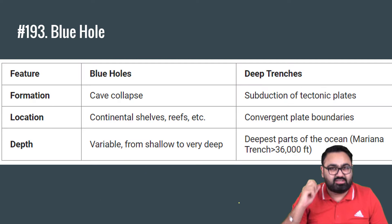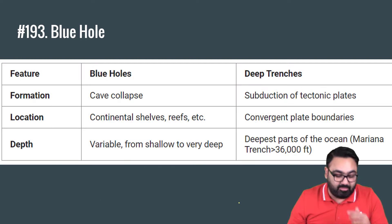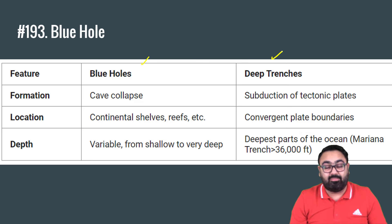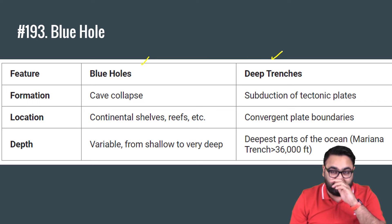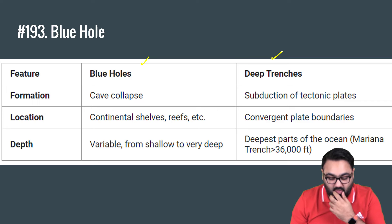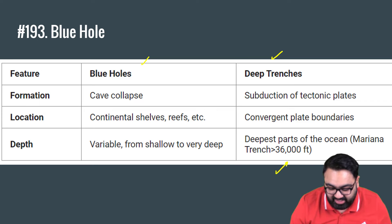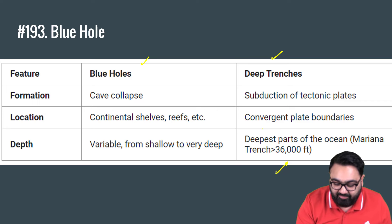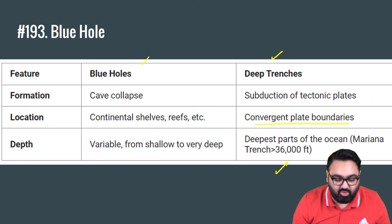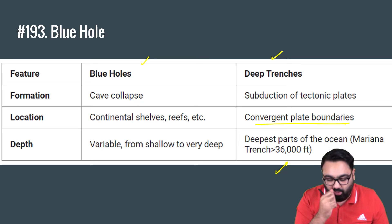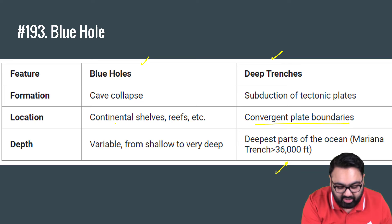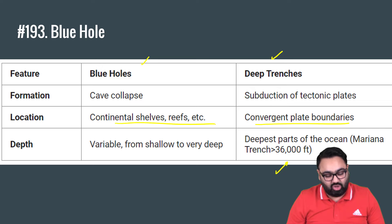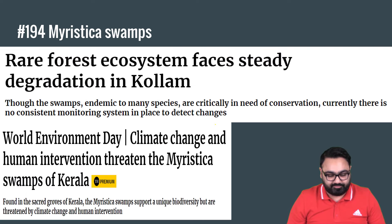Here are a few features to distinguish between blue holes and deep trenches. Deep trenches are extremely, extremely deep — for example, the deepest known is the Mariana Trench at over 36,000 feet deep. They are mainly found at convergent plate boundaries, while blue holes are found in continental shelves, reefs, etc. The way that they are formed is also very different from each other.